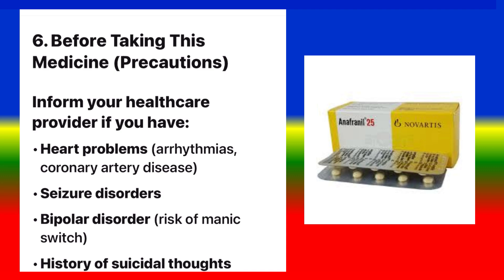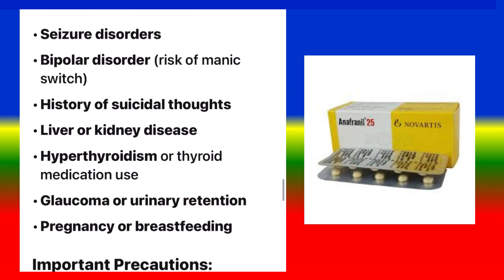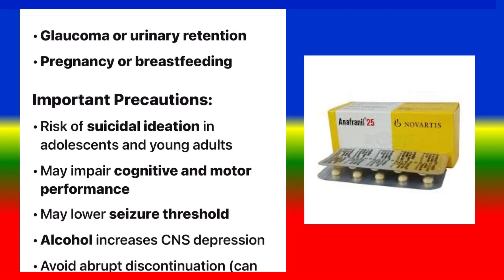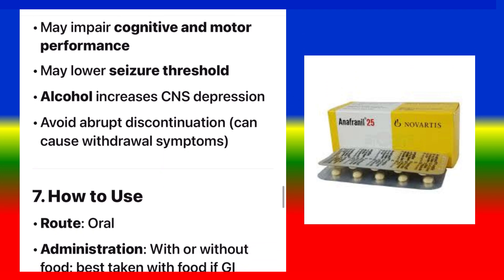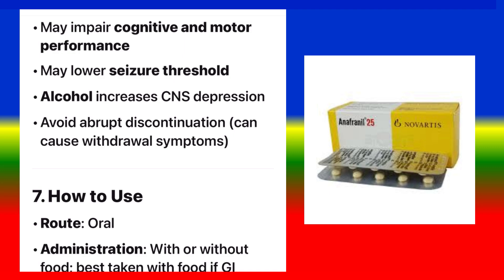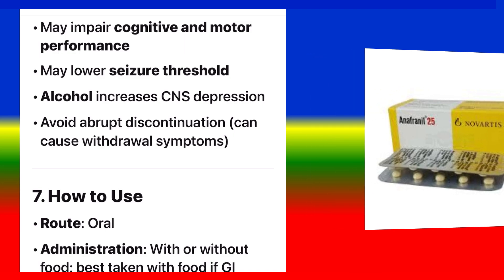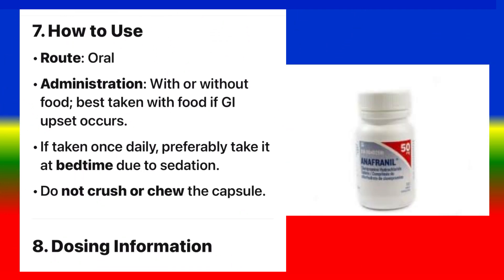Before Taking — Precautions: Inform your healthcare provider if you have heart problems or arrhythmias, coronary artery disease, seizure disorders, bipolar disorder (risk of manic switch), history of suicidal thoughts, liver or kidney disease, hyperthyroidism or thyroid medication use, glaucoma or urinary retention, or if you are pregnant or breastfeeding. Important: risk of suicidal ideation in adolescents and young adults; may impair cognitive and motor performance; may lower seizure threshold; alcohol increases CNS depression; avoid abrupt discontinuation.